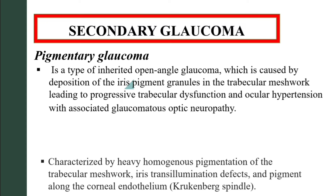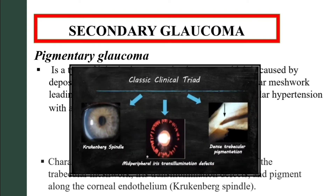The classic triad includes trans-illumination defects and pigment along the endothelium, called Krukenberg spindle. So the classic triad consists of Krukenberg spindles, mid-peripheral iris trans-illumination defects, and dense trabecular pigmentation.